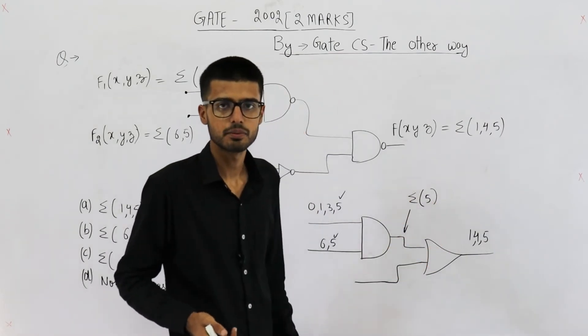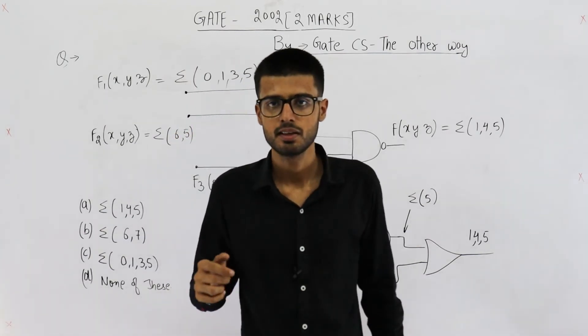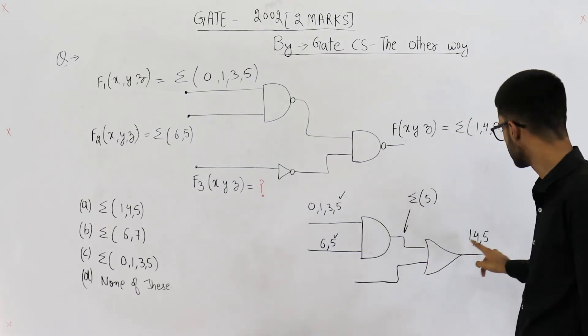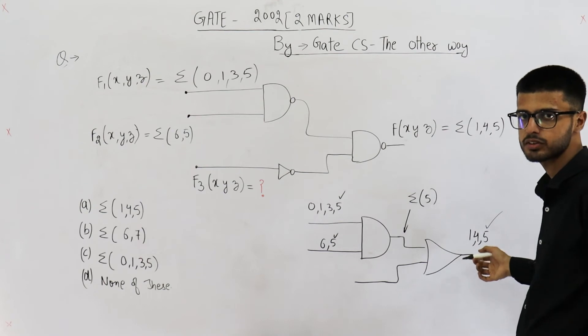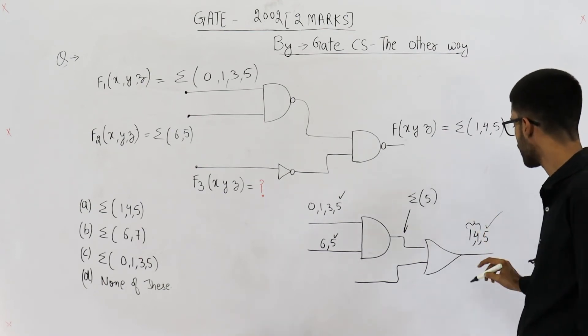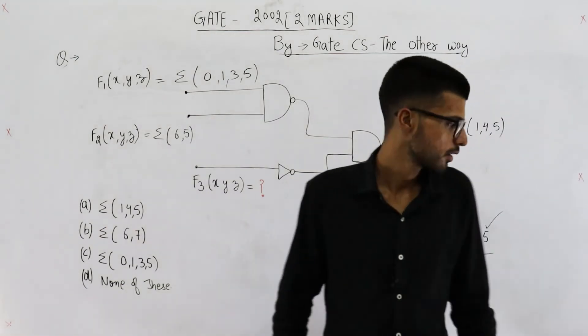This one is an OR gate. Whenever even one input of OR gate is high, it will output a high. And on five, this input is high, so you will get a high voltage when input equals five. But we also need high voltage on one and four.